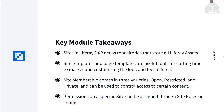Each Liferay site has a site membership policy, which can be one of open, restricted, or private. Any user can join an open site. Any user can see a restricted site in the list of sites in the Liferay instance, but could only make a membership request — the request must be approved by a site administrator in order for the user to become a member. Private sites aren't even visible in a Liferay instance's list of sites, and users must be added by site administrators.